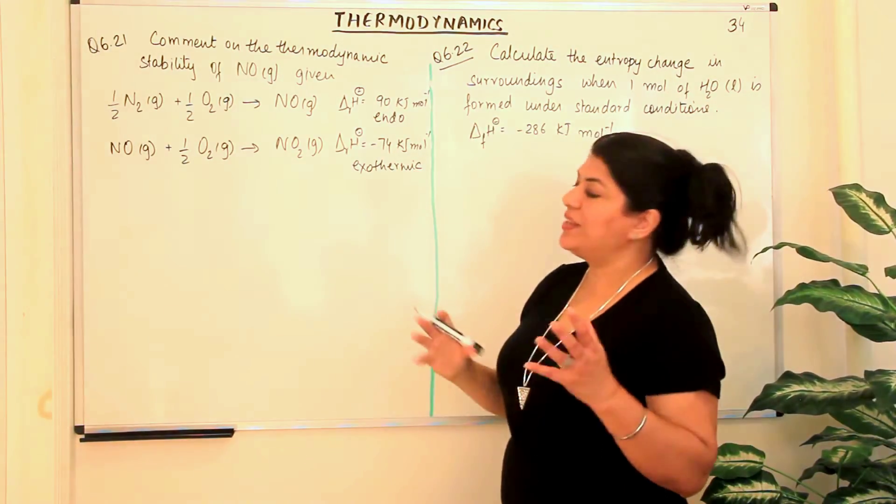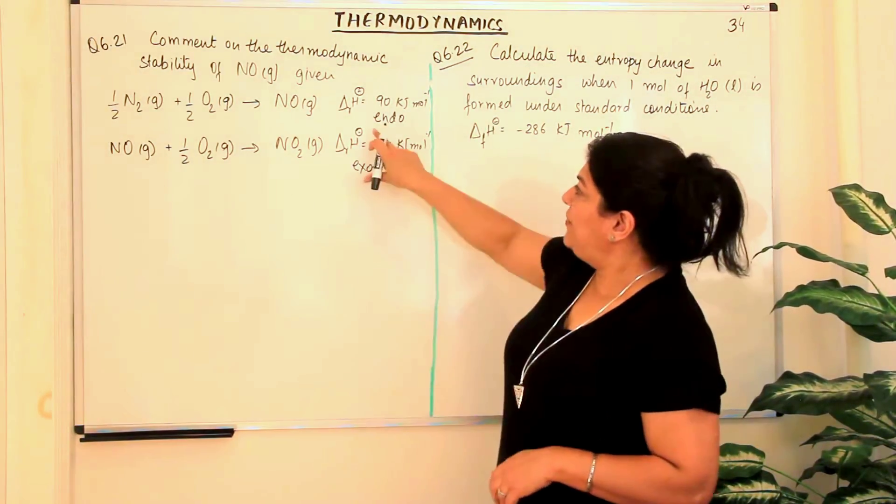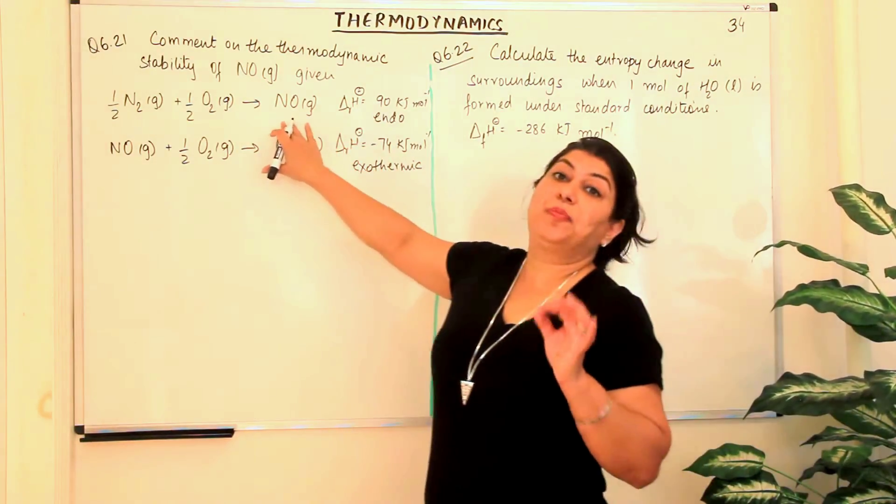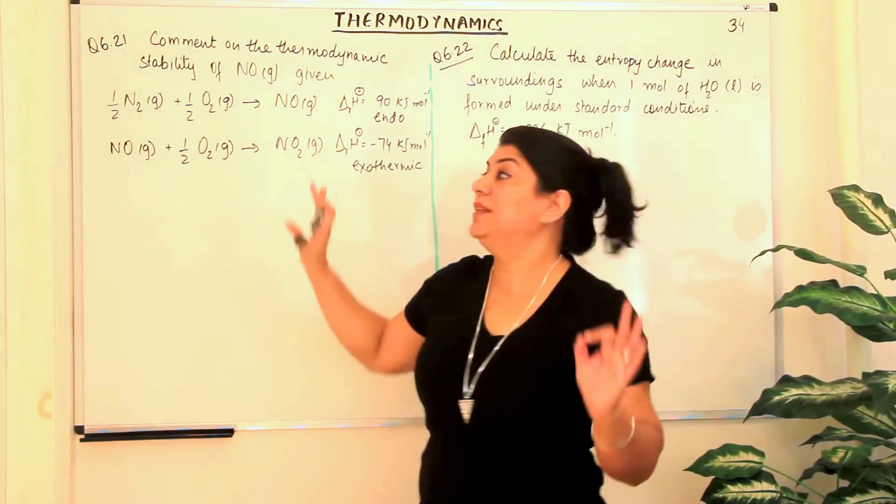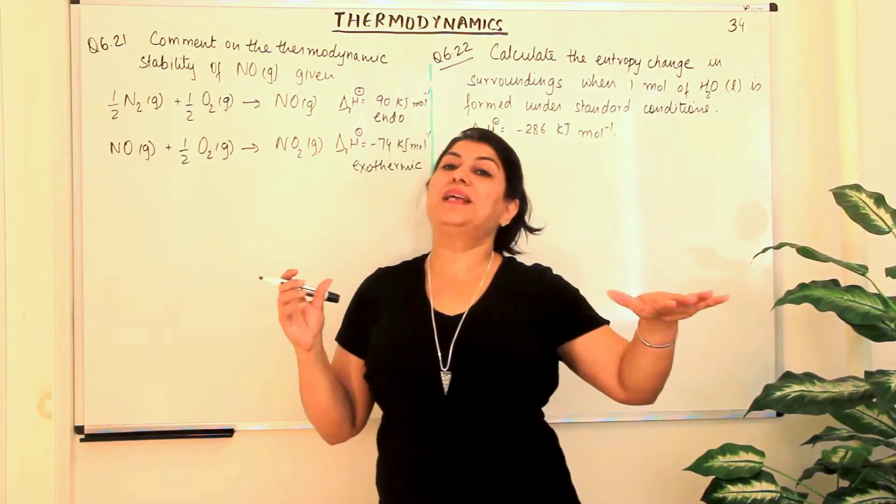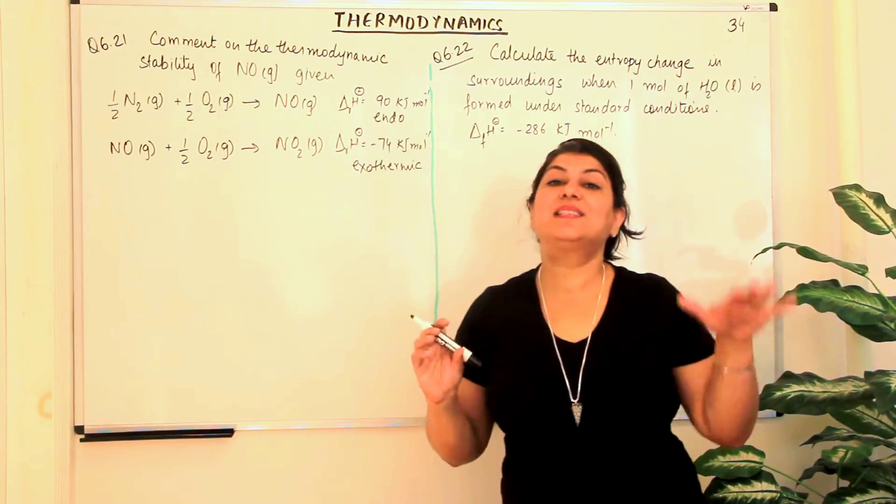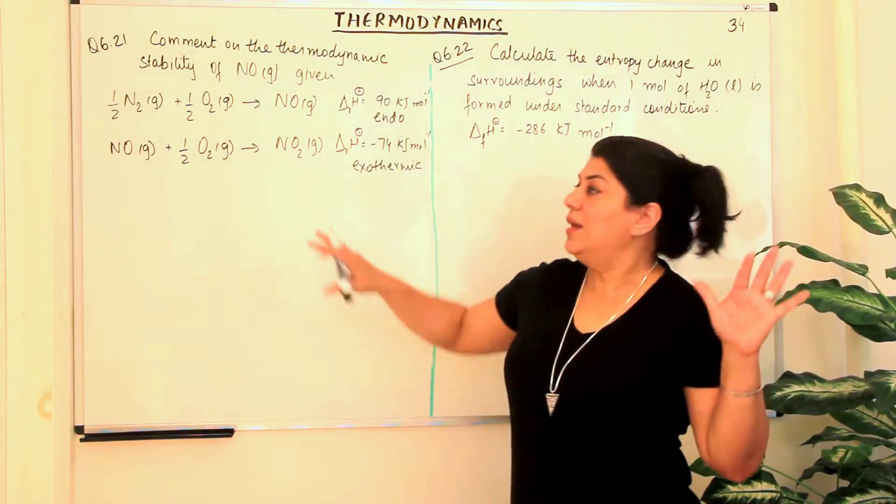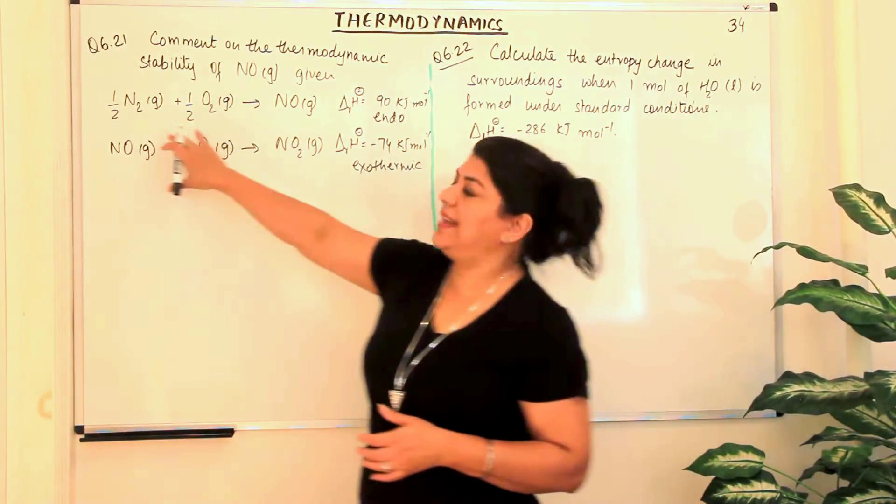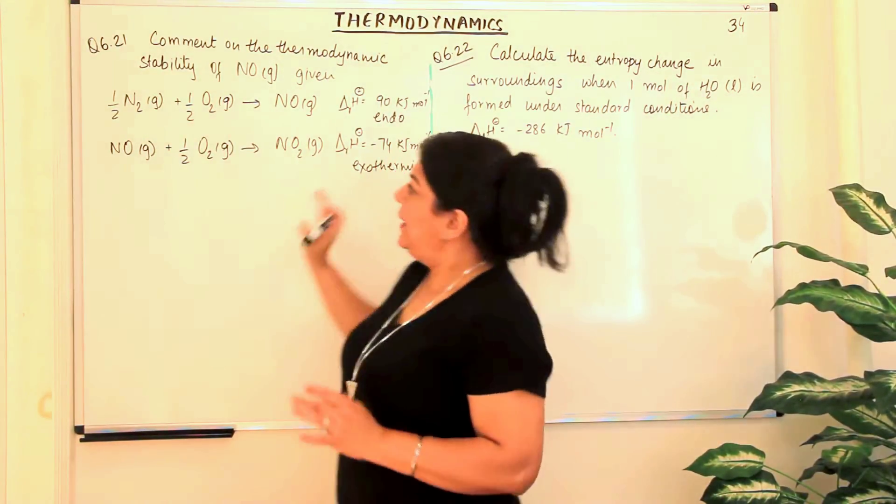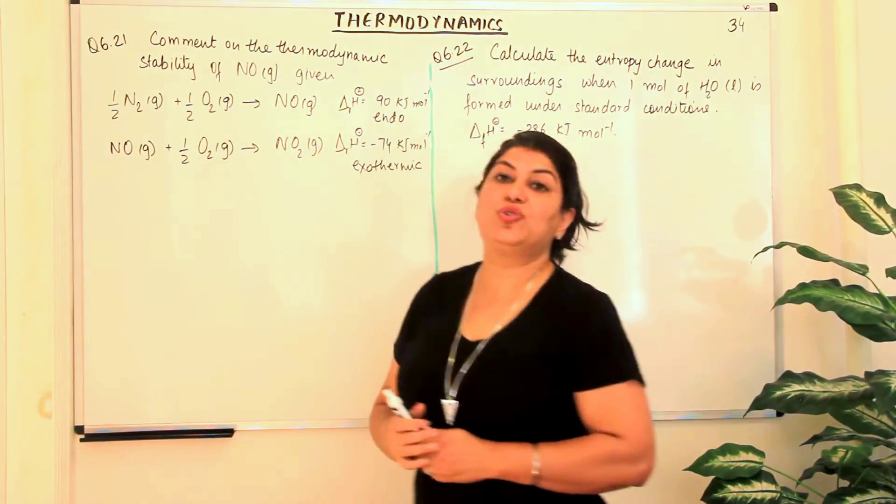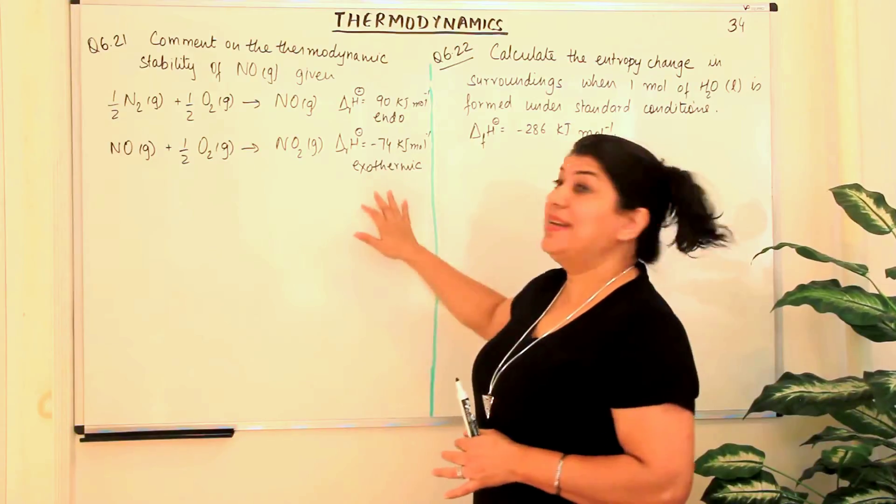Now, how does this help us determine whether NO is stable or not? If this is an endothermic process, it means the products are less stable than the reactants. In an endothermic process, it is leading to a less thermodynamically stable product. So NO here is thermodynamically less stable than NO2.